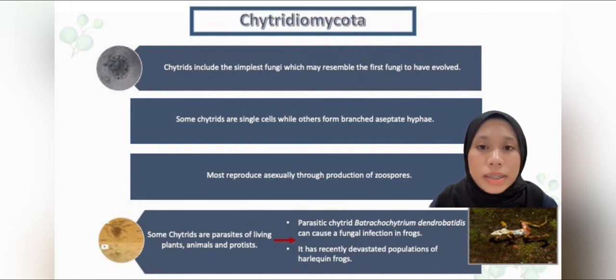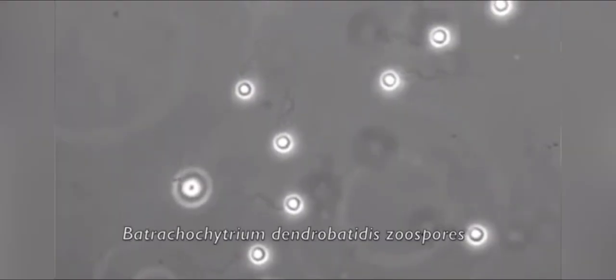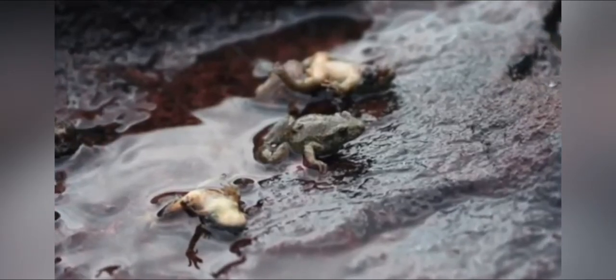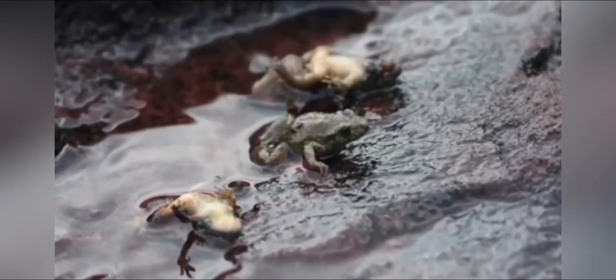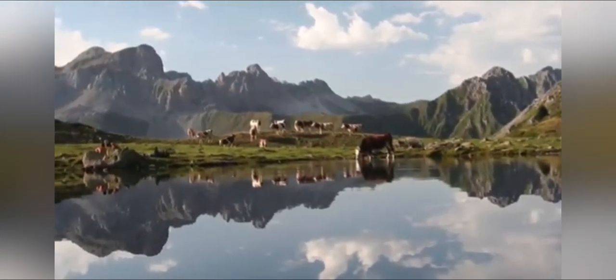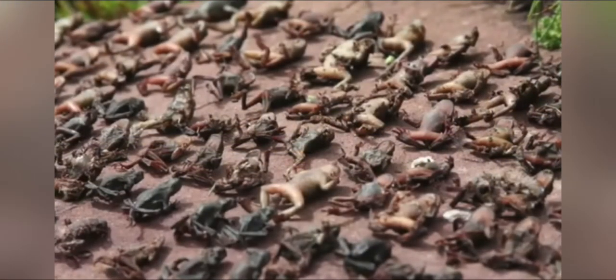An example of this is parasitic chytrid Batrachochytrium dendrobatidis, which can cause a fungal infection in frogs by burrowing under their skin. It has recently devastated populations of harlequin frogs, killing off two-thirds of them in Central and South America.